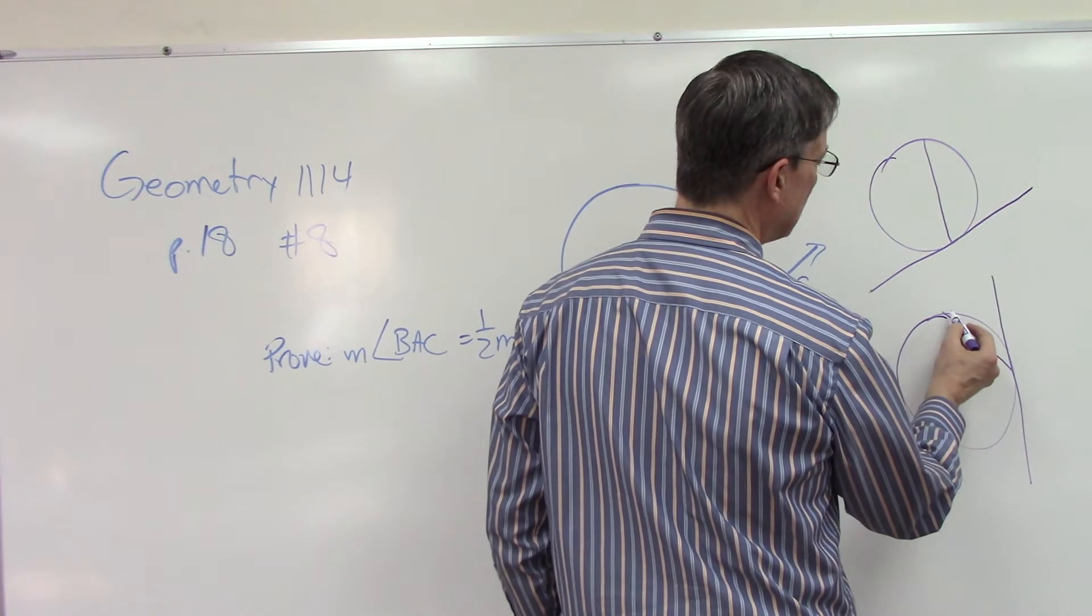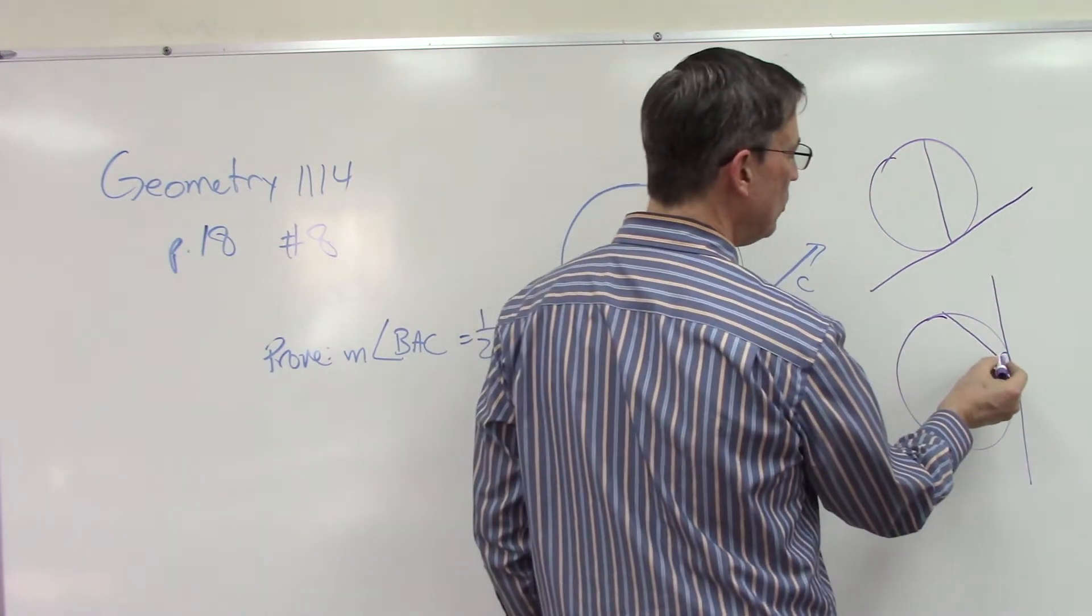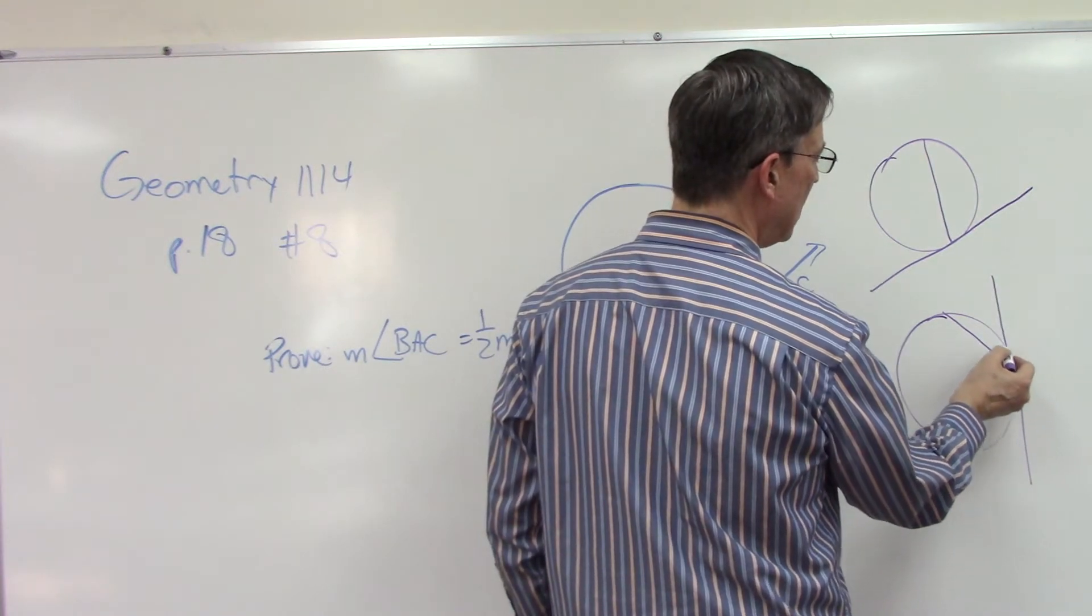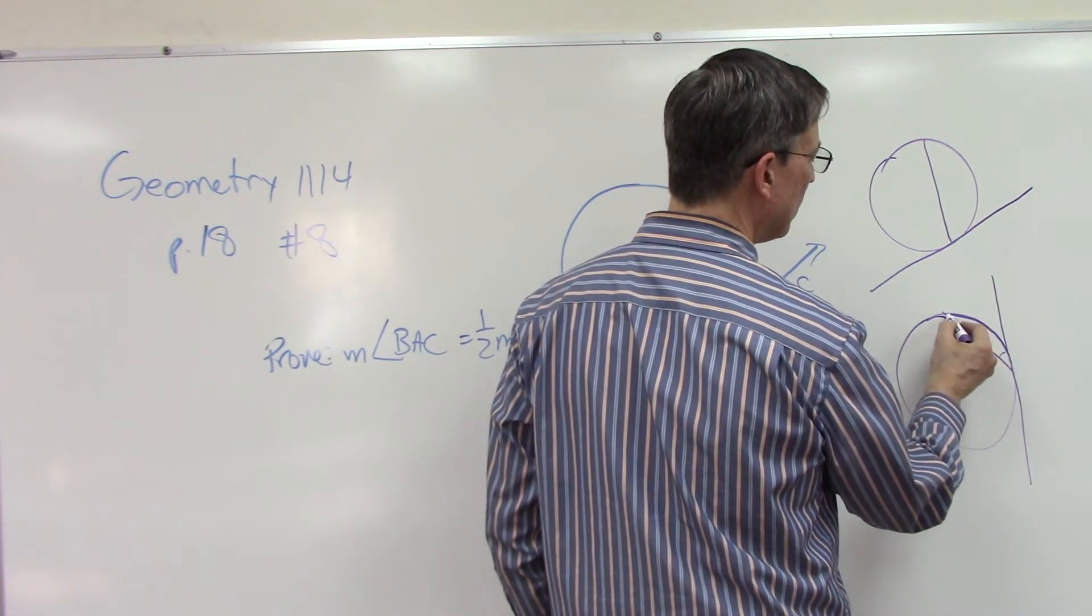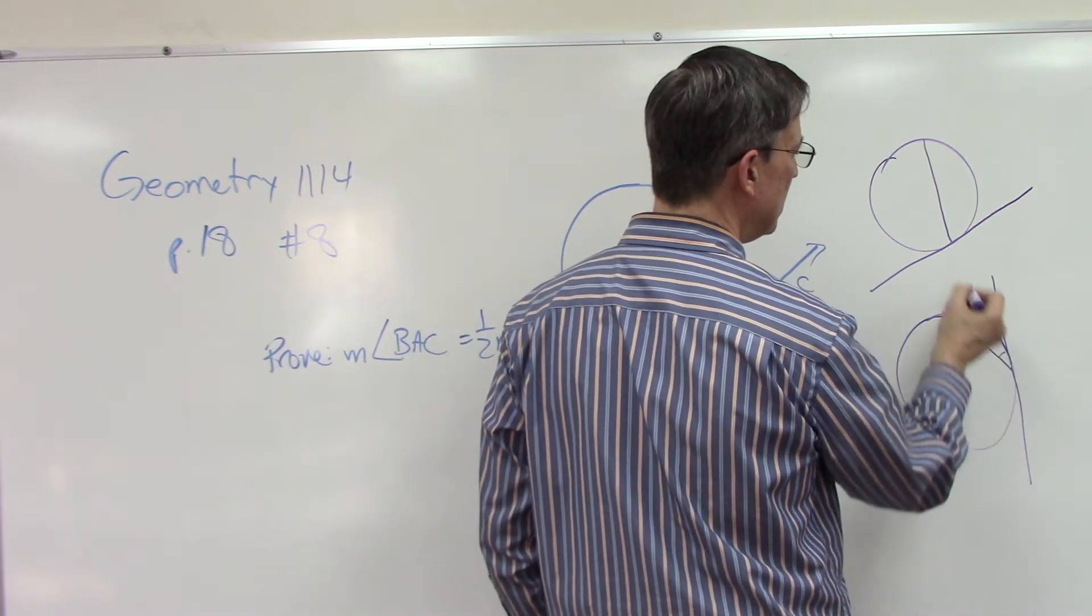is that this angle here that's formed is going to be half of this intercepted arc. So if I know that this arc is 60 degrees, then this angle is 30.